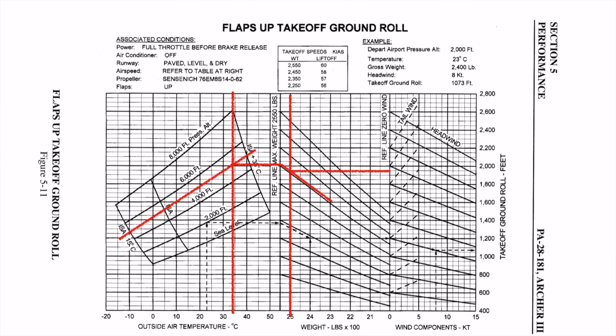Finally, draw a vertical line at the 3-knot point on the graph and draw a line from the previous horizontal line, paralleling the wind reference until it crosses that 3-knot line. Draw a horizontal line all the way to the right of the chart. This line indicates our estimated takeoff roll distance.